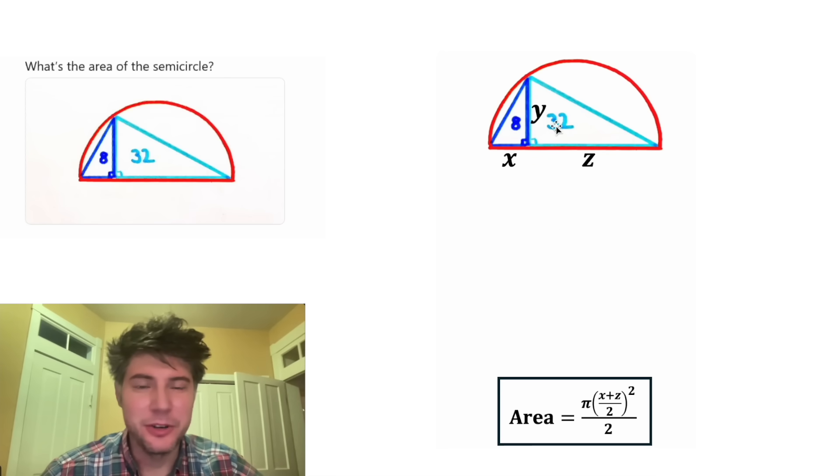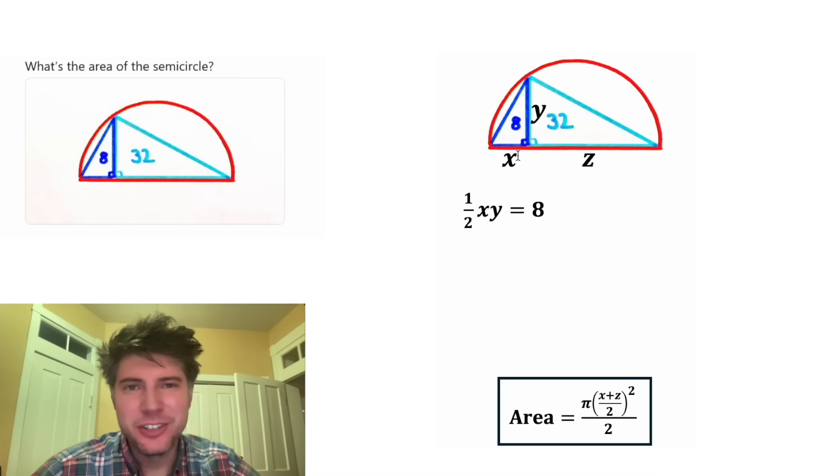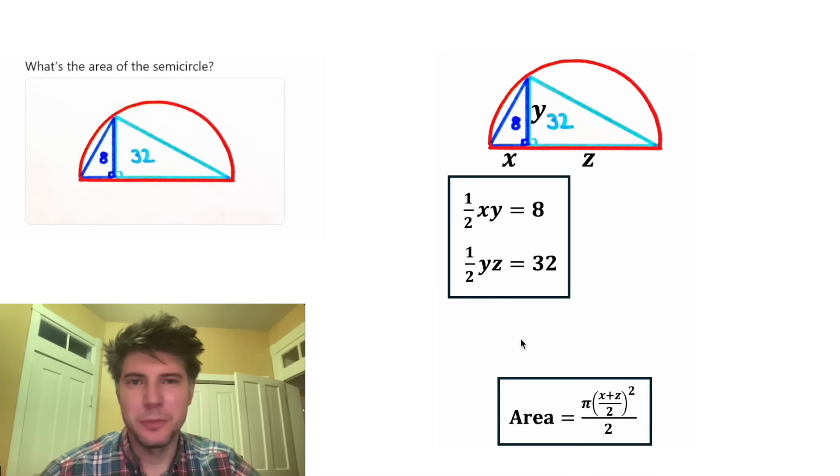Next, let's use up this 8 and the 32. The area of this triangle is 1 half base times height, which is 1 half X times Y. And that's equal to 8. And this other triangle is also 1 half base times height. So it'll be 1 half Z times Y is equal to the area of 32. And let's rearrange this to keep things alphabetical. And these two area formulas look important. Let's put a box around them.